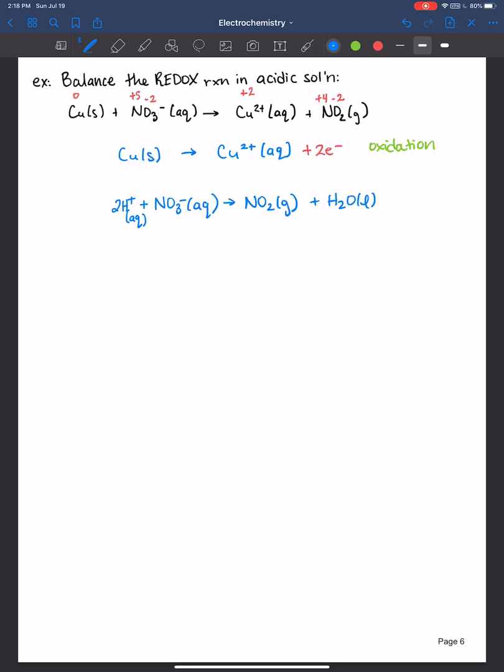So we're balanced by mass. Now we need to be balanced by charge. And so what you want to do here is you want to look at the overall charge. And here it looks like it's plus two. So always take into account stoichiometric coefficients. So two times a plus one is plus two minus one. So plus two minus one is a plus one.